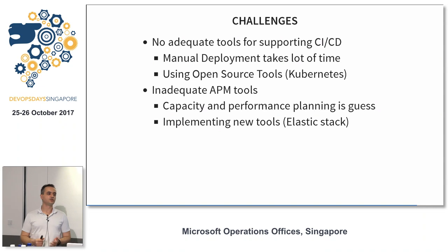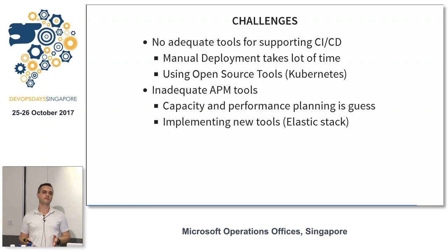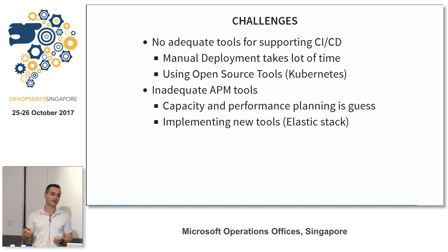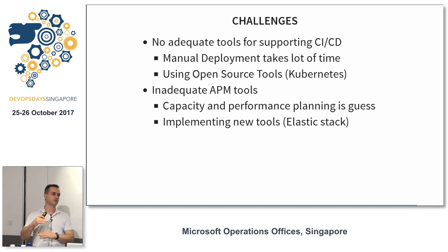We don't have adequate tooling to support CI/CD, so manual deployment still takes a lot of time. We tried moving from Ansible to the Kubernetes model. If you treat infrastructure as a pet, Ansible is probably not the best answer — it's stateless. We saw a few issues during deployment in production where things assumed in your playbooks won't work if your infrastructure is treated as a pet and can't be spun up or bootstrapped. Kubernetes will probably solve this because it abstracts all that complexity.